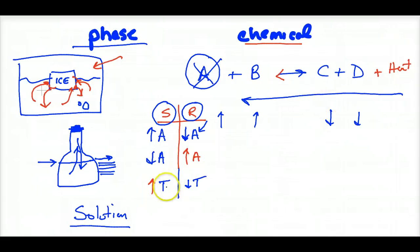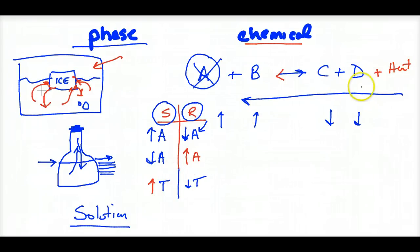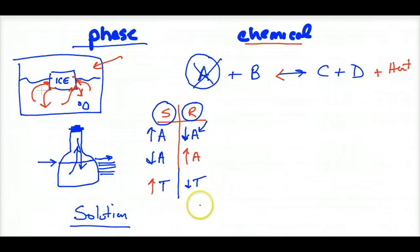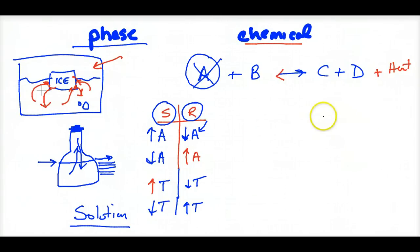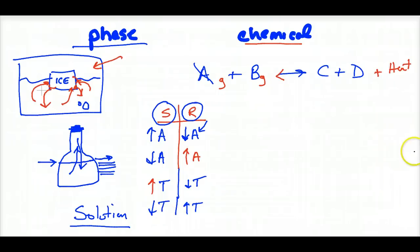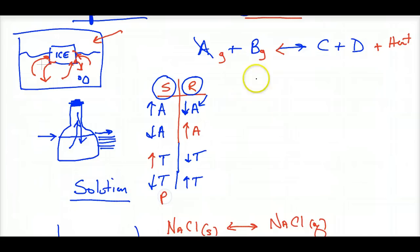You don't have to memorize that increasing temperature favors the endothermic direction — just understand the logic: we have too much heat, so we use it up. If the gases are different on each side, pressure matters. If I increase pressure on a reaction with 2 moles of gas on the left and 0 on the right, the reaction shifts to the side with fewer moles of gas to lower the pressure.